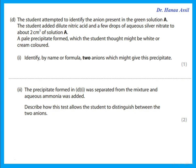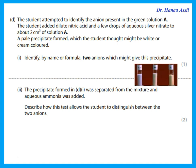The student attempted to identify the anion in green solution A by adding dilute nitric acid and a few drops of silver nitrate. Nitric acid and silver nitrate is a test for halides. A pale precipitate formed which the student thought might be white or cream. Remember: chloride gives white, bromide gives cream, iodide gives yellow — and sometimes it is difficult to tell if it is white or cream. So identify by name or formula two anions which might give this precipitate: chloride or bromide.